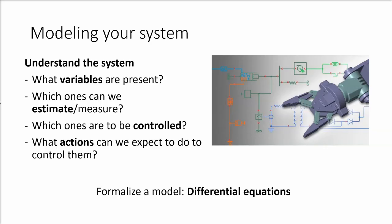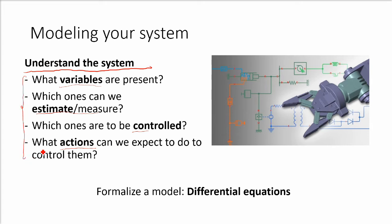From a model, we want to understand the system — to identify how it works and how we can have any effect on it. We need to first think about what type of variables are present in the system and what type of information it contains. Once we identify those variables, we want to think about which ones we can actually measure or estimate, which ones can be controlled, and by which actions we can have any effect on them. Then we can formulate a model with differential equations describing how those variables interact.